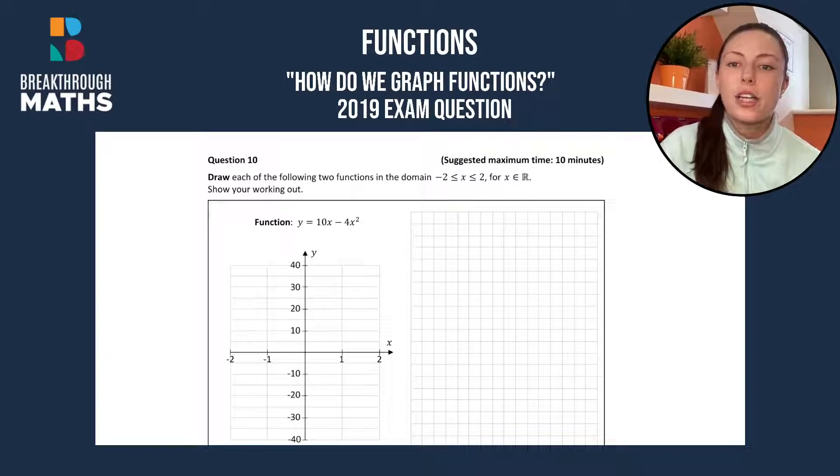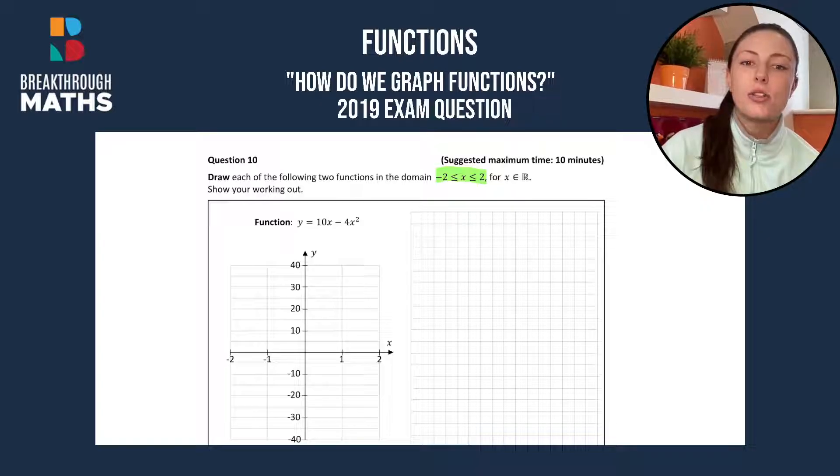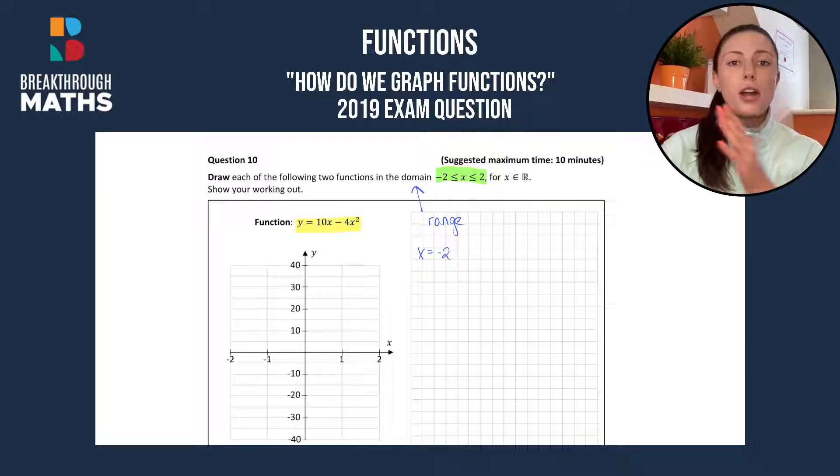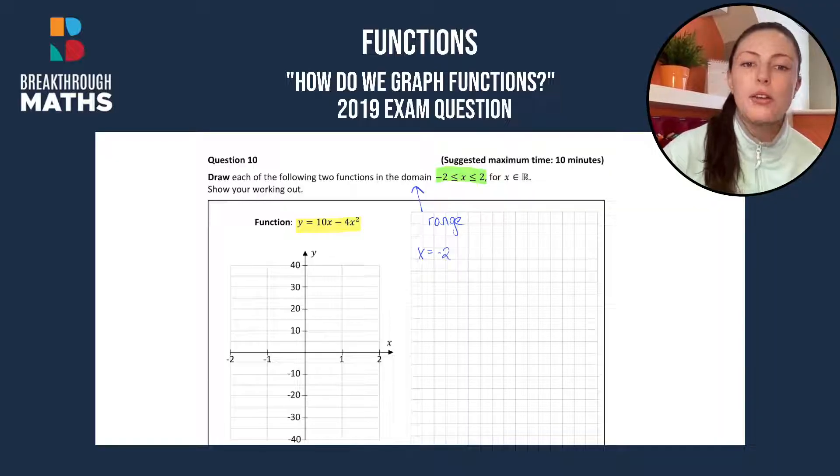We are asked to draw each of the following functions in the domain minus 2 is less than or equal to x and x is less than or equal to 2. Our function is y equals 10x minus 4x squared. The key word here is domain. A domain just means a range and it's showing us the range of x values. So what are all the values between minus 2 and plus 2? Because they're both included on either side.